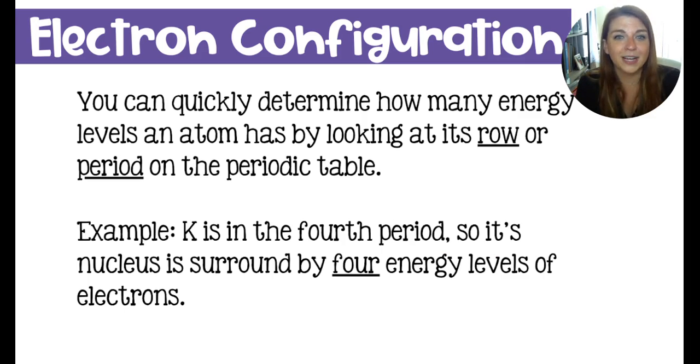You can use the periodic table to kind of figure out what the electrons look like inside of an atom and how they're organized. So the rows on the periodic table that go across are called periods. And if you look at potassium, for instance, fourth row, potassium is in the fourth row or the fourth period. So its nucleus is going to be surrounded by four energy levels of electrons.